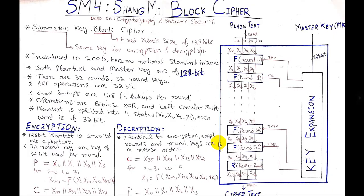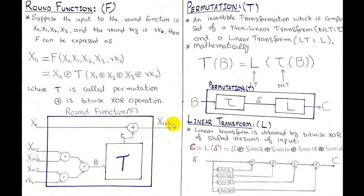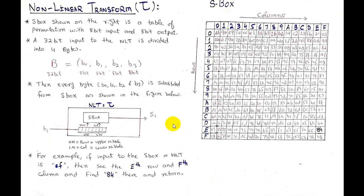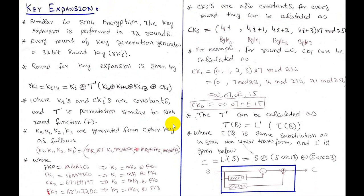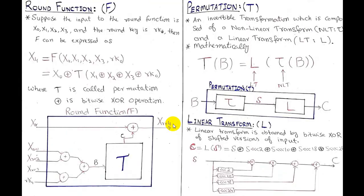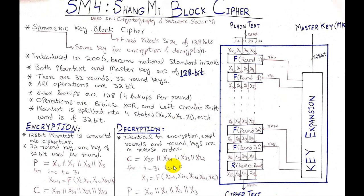Hello friends, today we will see what is the SM4 block cipher, what is the encryption and decryption process in this block cipher, what is the round function, and how permutation, non-linear transformation, and linear transformation are used for performing a round function and how all these transformations are used for the key expansion methodology for the encryption and decryption process of the SM4 block cipher.